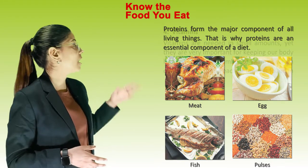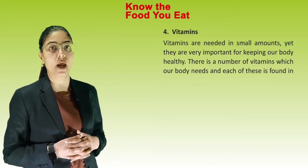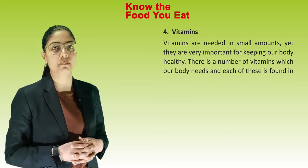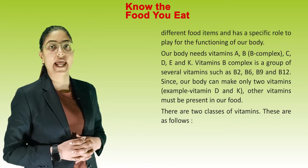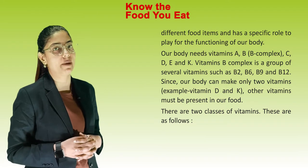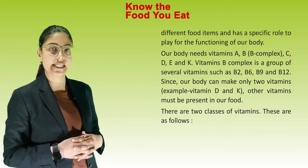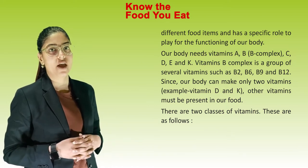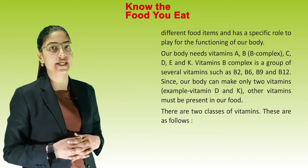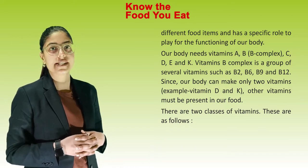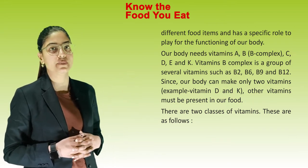Fourth one is vitamins. Vitamins are needed in small amounts, yet they are very important for keeping our body healthy. There are a number of vitamins which our body needs and each is found in different food items with a specific role for the functioning of our body. Our body needs vitamin A, B, B complex, C, D, E and K. Vitamin B complex is a group of several vitamins such as B2, B6, B9 and B12. Since our body can make only two vitamins — vitamin D and K — other vitamins must be present in our food.